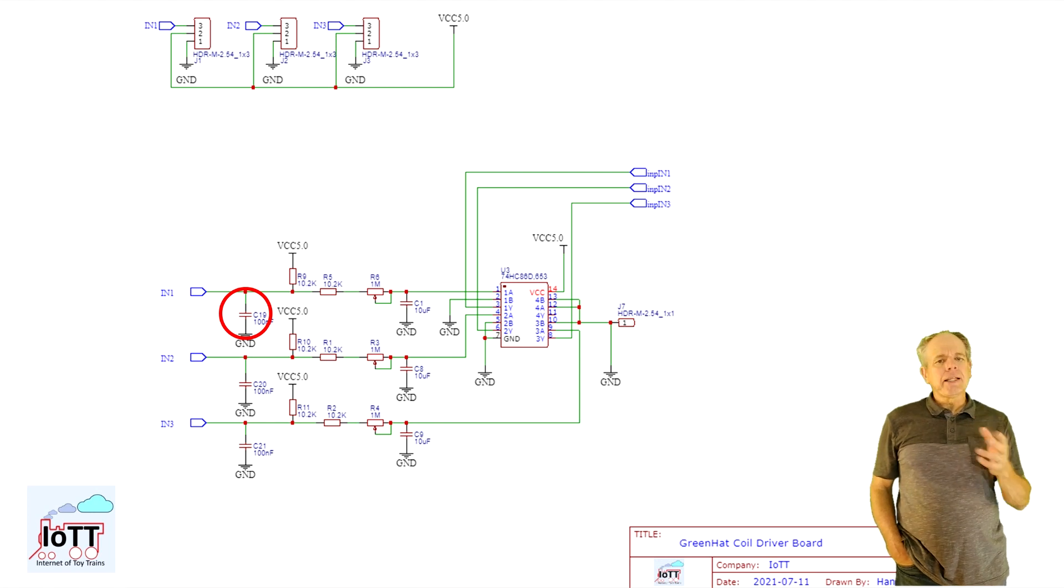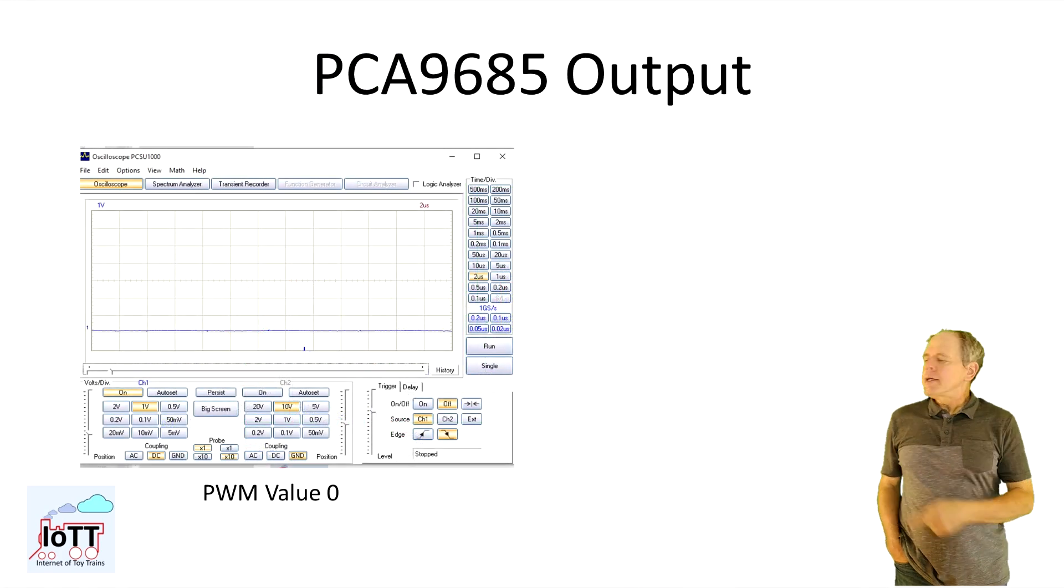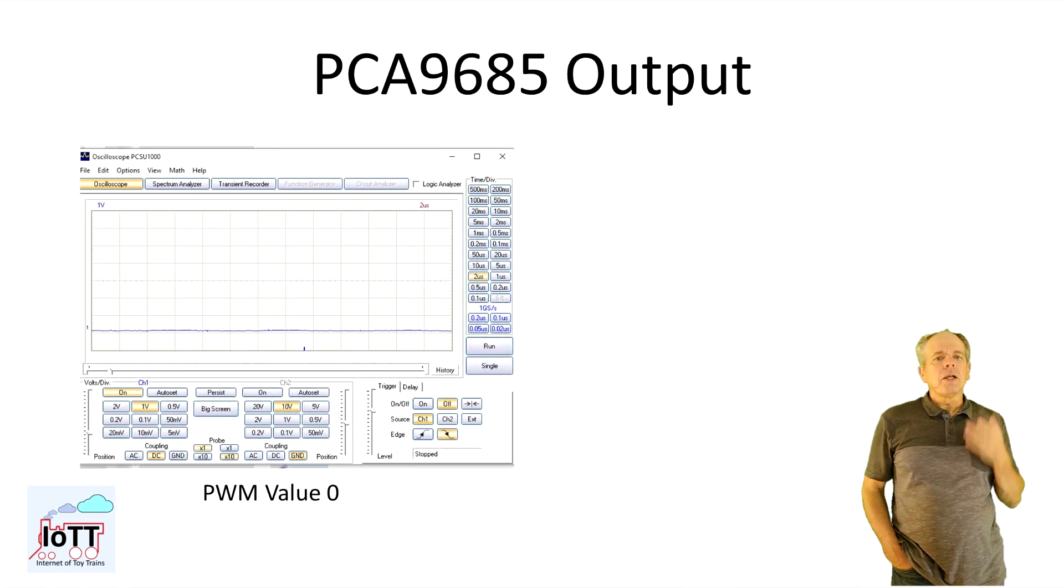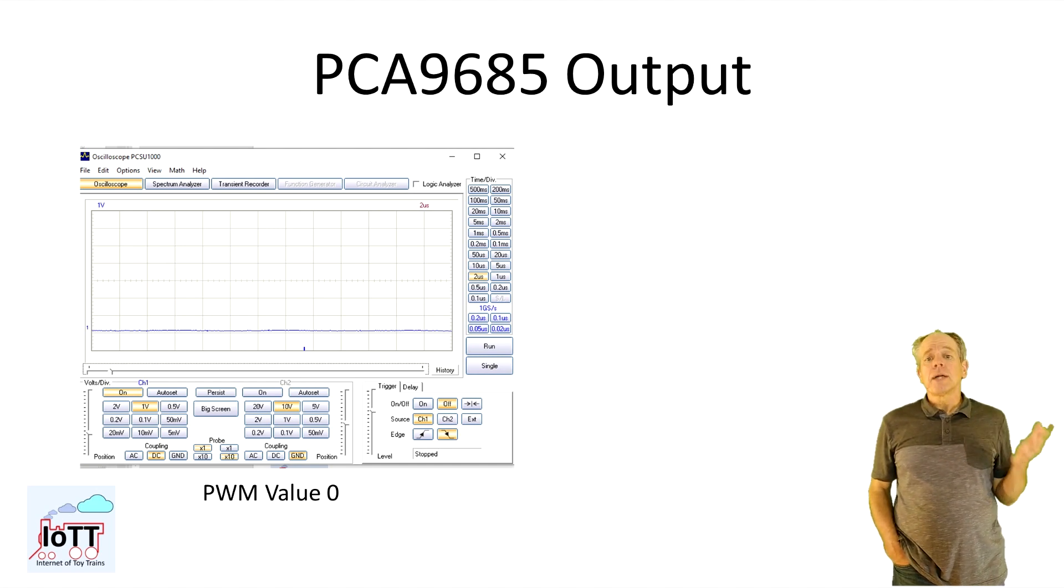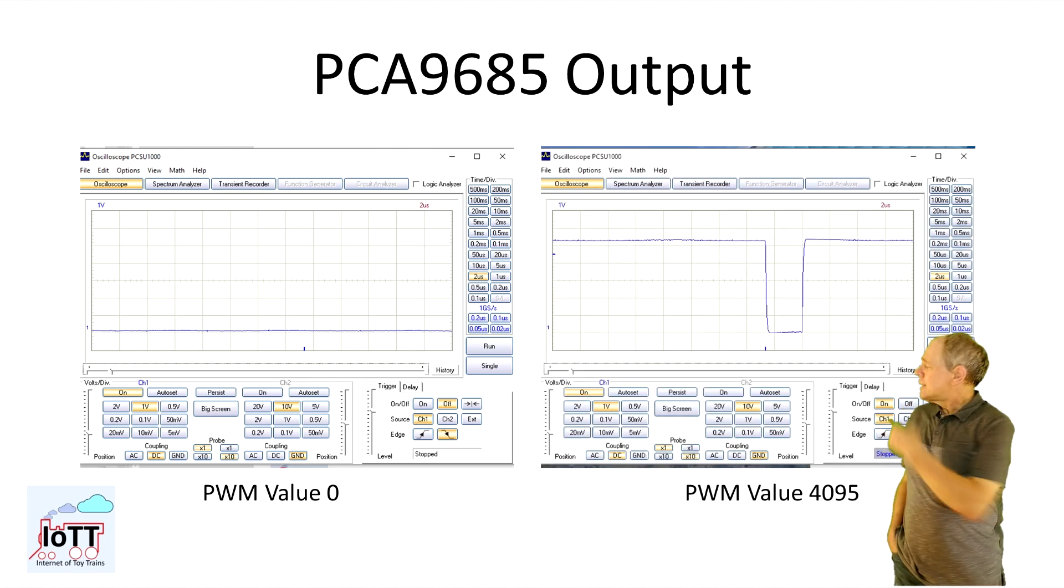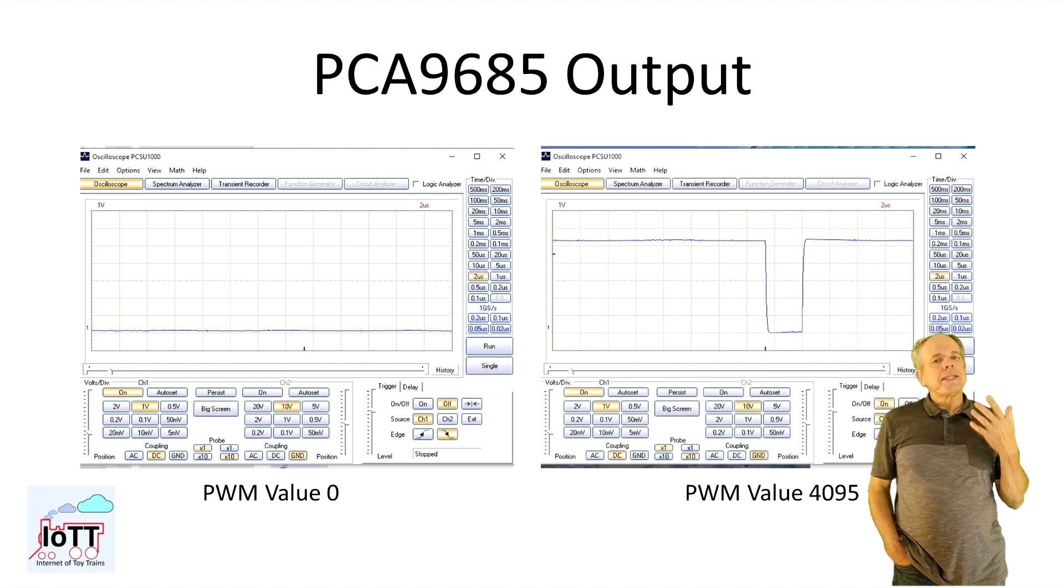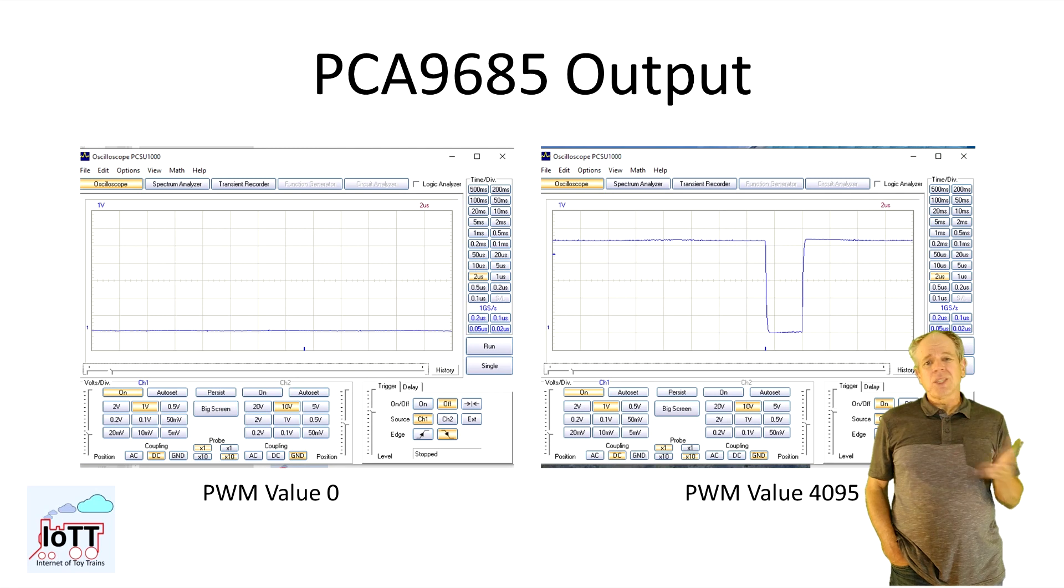That was actually a little surprising and you should be aware of that when doing PCA9685 projects. Here is what the output signal looks like if the PWM value is set to zero. Nothing over the full time period as expected. But here is how it looks like when setting the value to 4095, so the maximum value. As you see, there are still some negative spikes at the end of the PWM period, so 100% PWM does not mean on all the time.